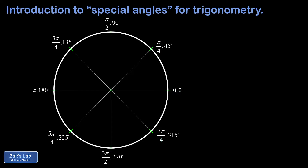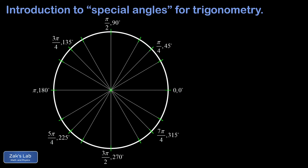Now we look for every angle obtained by moving 30 degrees away from one of the cardinal directions — 30 degrees from 0, above and below straight up, from 180, and clockwise and counterclockwise from the bottom. This will complete our set of special angles. The first angle is 30 degrees, since we moved 30 degrees counterclockwise from the positive x-axis. Since 90 degrees is pi over 2, a third of that is pi over 6. So 30 degrees equals pi over 6.